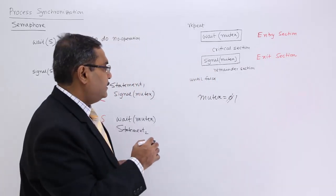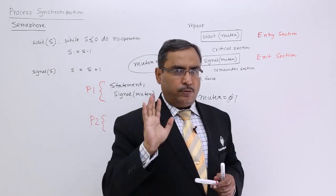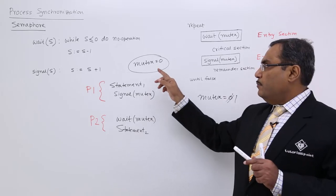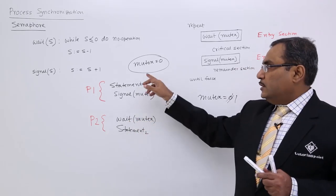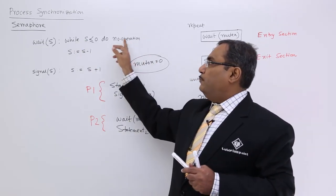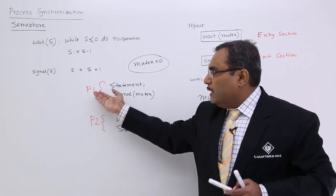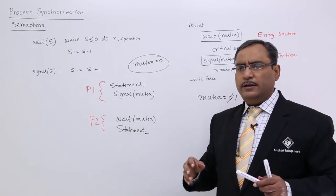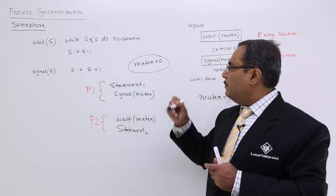Initially the value of mutex is 0, and we require P1 to execute before P2. Since mutex = 0 and P2 arrived before P1, P2 executes wait(mutex). While mutex ≤ 0 is true, so do no operation — P2 gets blocked in an infinite loop. After some time P1 arrives. P1 has nothing to do before executing statement 1, so it executes statement 1. At the end it does signal(mutex), so the mutex value is incremented by 1, becoming 1.